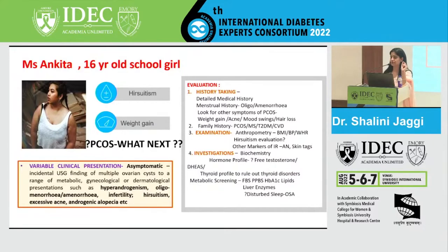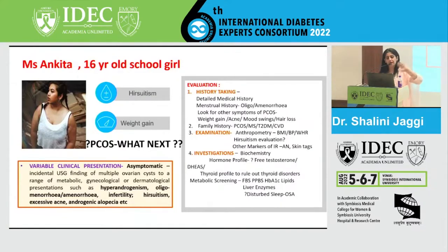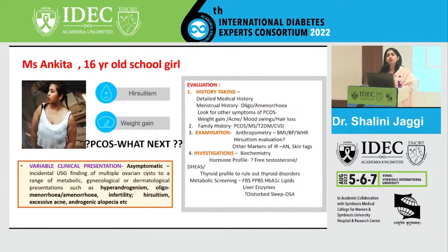After history, move to examination. Basic anthropometry is essential: height, weight, blood pressure, BMI, and waist-hip ratio — which is very important in Asian Indians. Also evaluate for hirsutism using the modified Ferriman-Gallwey criteria, and look for markers of insulin resistance on examination.